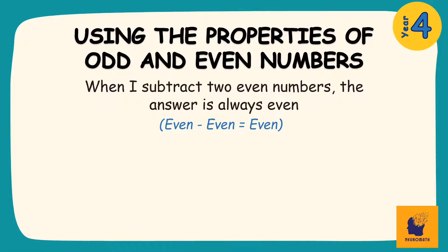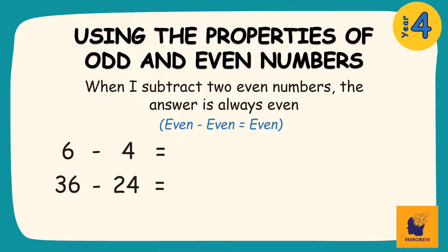The first thing we need to understand is that when I subtract two even numbers, the answer is always even. What this means is that when I take an even number away from an even number, my answer will be even. So I could have a problem like 6 take away 4, or 36 take away 24, or 134 take away 102. Because an even number is being subtracted from an even number, I will get an even number as my answer.